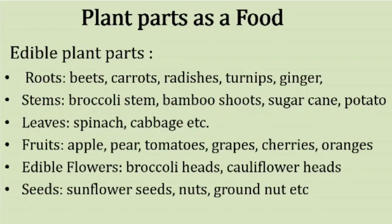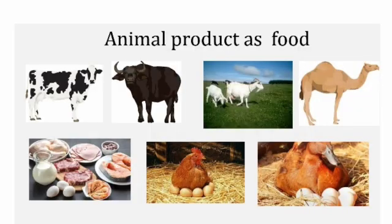As for animal products as food: animals also provide us some important products which we eat and drink daily. We get milk from cow, buffalo, goat, and even from the camel in desert areas. We get eggs from hen and duck. We also get meat from chicken, goat, camel, and others.